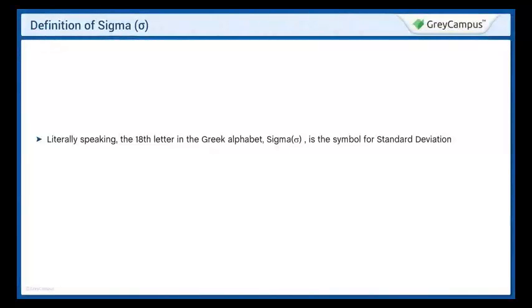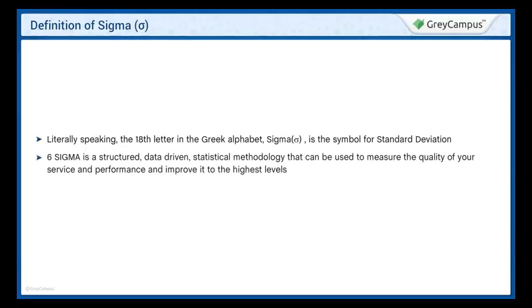Sigma is the symbol for standard deviation. The standard deviation is a measure of how spread out numbers are. In other words, it is one of the measures of dispersion or variation. Six Sigma is a data-driven, statistical methodology used to measure the quality of service and performance.